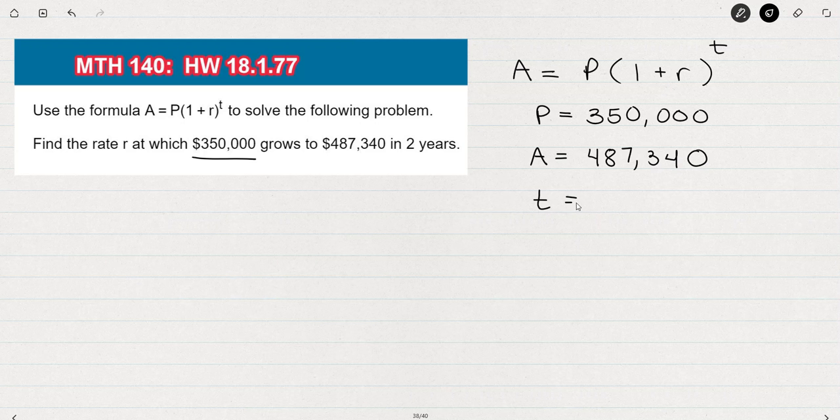And then finally we're given that the number of years, T, is 2. So the first step was that I wrote the formula. The second step was that I wrote out what I know. And the third step is going to be to fill in what I know into the formula.